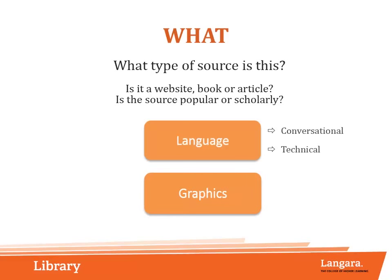You can also look to visual elements like pictures or graphics for hints. Popular articles often use graphics purely for visual appeal to make the article more eye-catching. Scholarly sources, on the other hand, use graphics to illustrate findings or analyze particular elements of their research. If you are unsure about what kind of source you are looking at, you can always ask a librarian or your instructor for help.